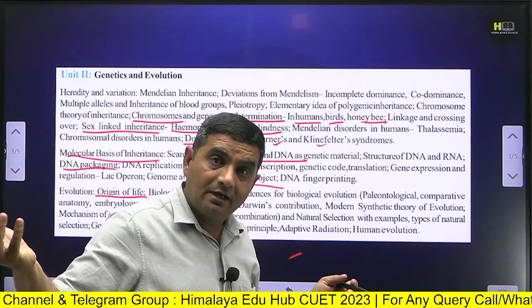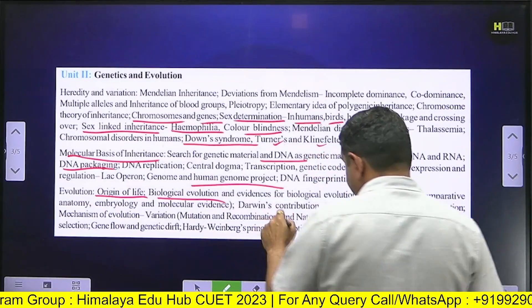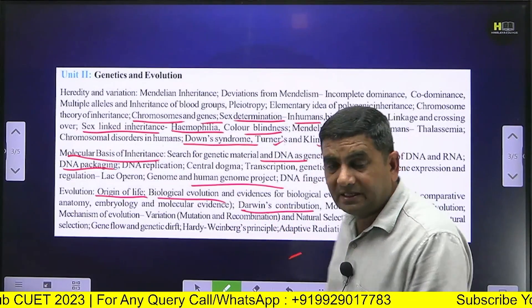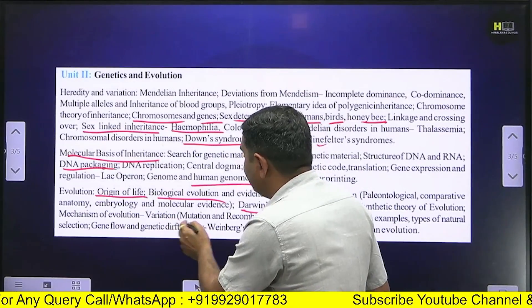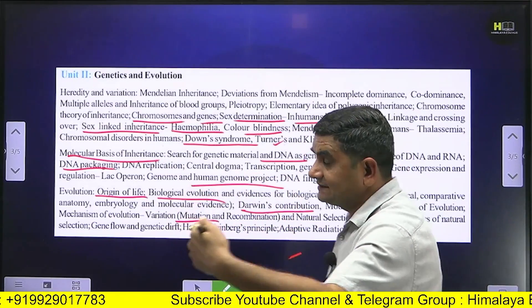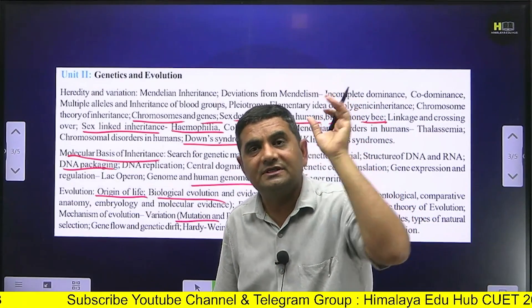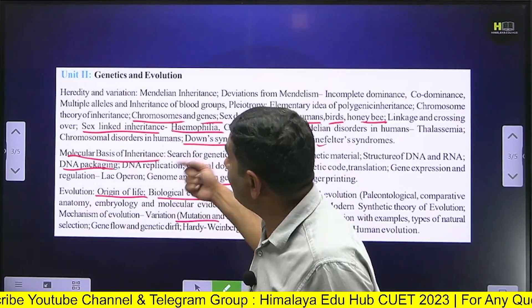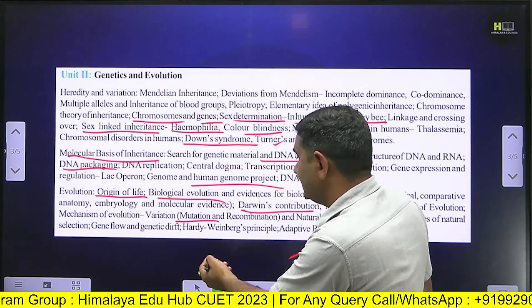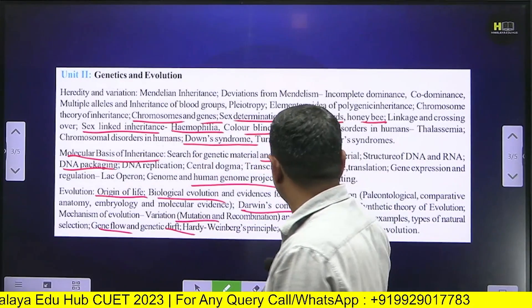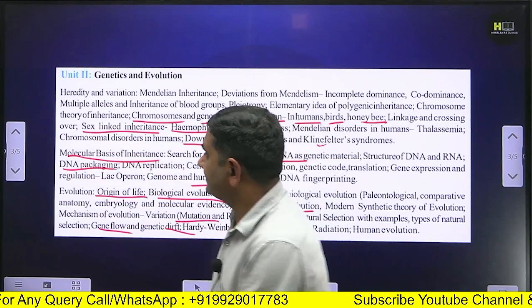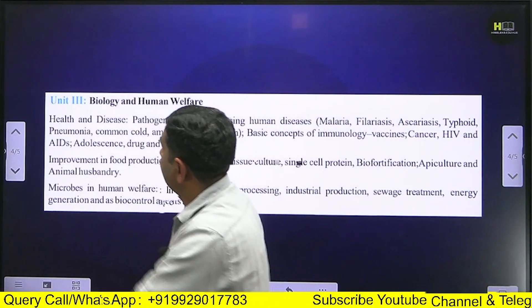We will cover Darwin's theories, Lamarck, and Hugo de Vries's mutation theory. Natural selection, variations from mutations and recombination, gene flow, genetic drift, Hardy-Weinberg principle, adaptive radiation, and human evolution will all be discussed in Unit 2 and Unit 3.